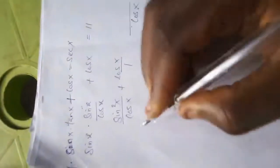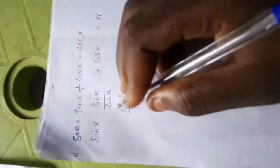The LCM is cos x. Cos x divided by cos x is 1, 1 times sine square x is sine squared x, plus cos x divided by 1 is cos x, multiply by cos x is cos square x.